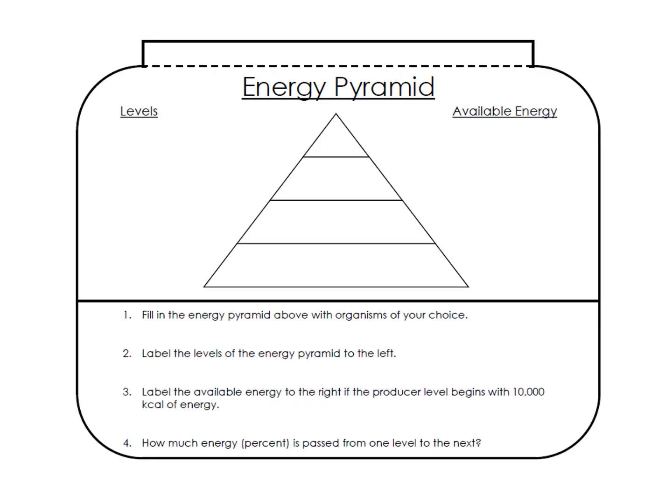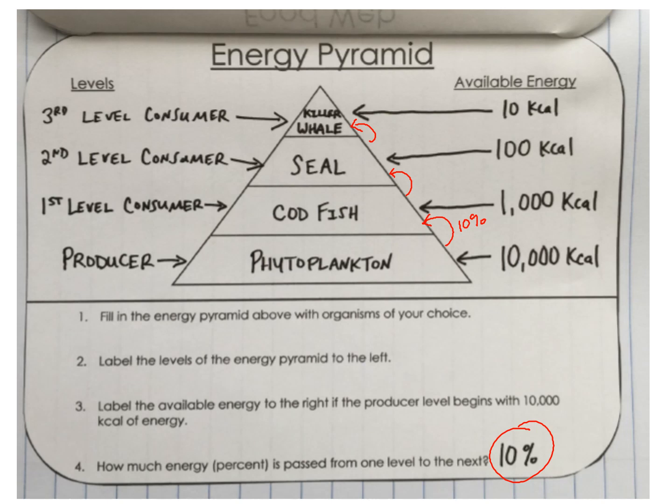Here are your notes. On the right-hand side we've got kilocalories — that's how we measure energy when we eat food. If you look at the back of a food label, it has kilocalories, though they just say 'calories.' If we start out with 10,000 kilocalories at the bottom, only 10% goes up — so that's 1,000. Then 10% of that goes up, so that's 100. Then 10% again — so it's 10. Every time, I'm losing 90% of it and only 10% is going up. You can just move the decimal or remove a zero. We have the producer at the bottom, then our primary, secondary, and tertiary consumers as we go up.